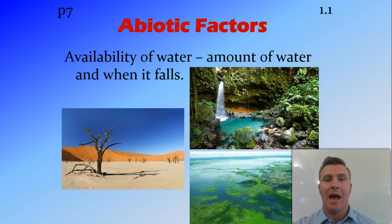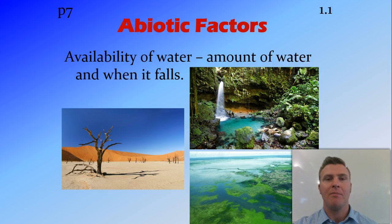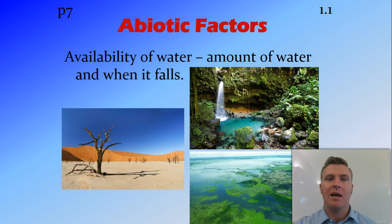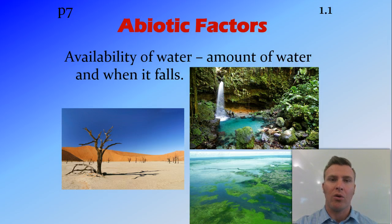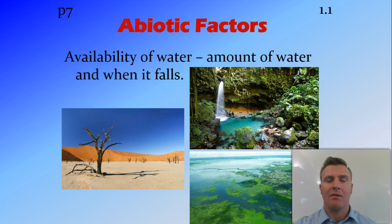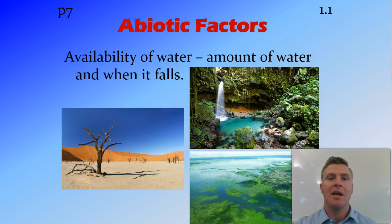The availability of water is how much water there is and how often it falls. In aquatic environments this is generally not a problem, though osmotic pressure — how salty the water is — becomes relevant. In terrestrial environments it's very important: a rainforest has heavy rainfall all year round, a desert has very little, and tropical areas like northern Australia may have a large amount of rain in one season (the wet season) and very little for the rest of the year (the dry season).